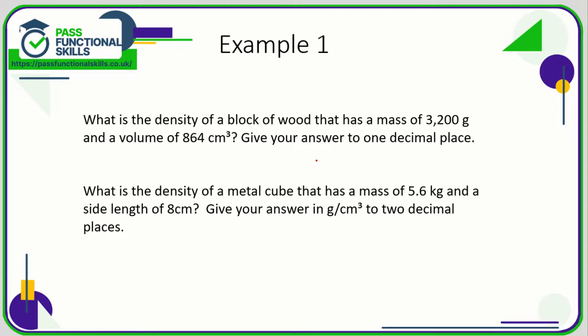Let's take a look at some example questions. Here we're trying to work out the density, so density is the mass divided by the volume. It's 3200 grams divided by 864 cubic centimeters, so therefore the density is going to be 3200 divided by 864 which equals 3.703. To one decimal place that's going to be 3.7, and because we used grams and cubic centimeters the unit is going to be grams per cubic centimeter.